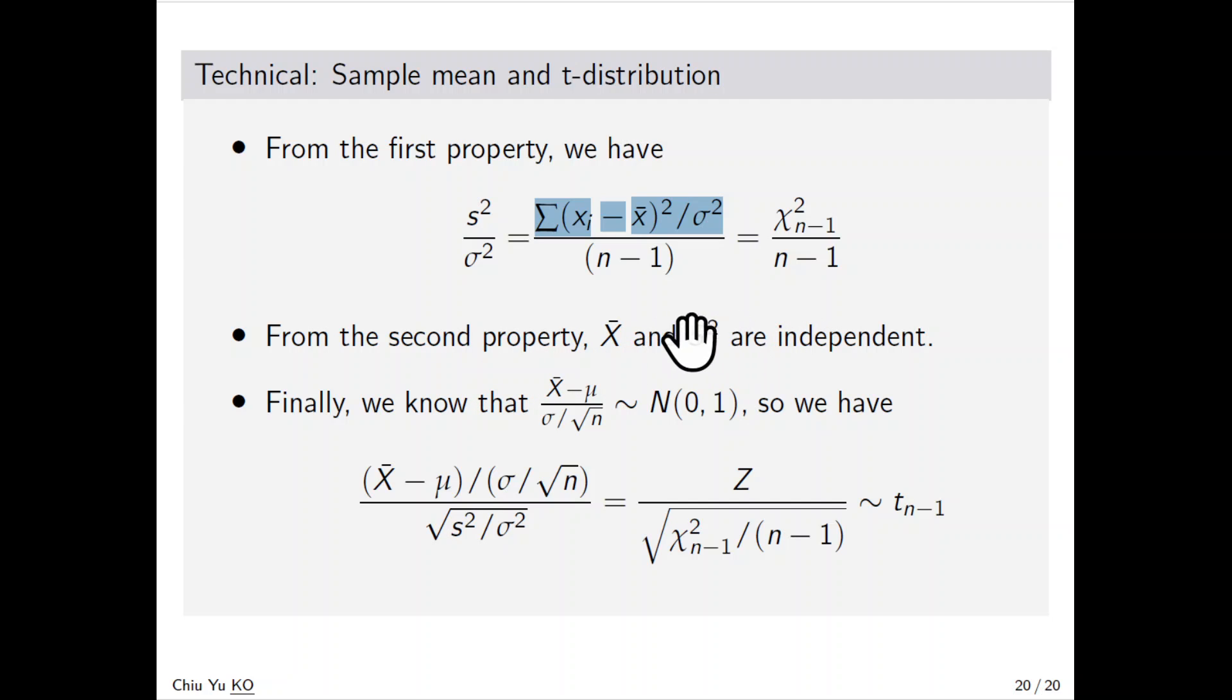This means we can write (X̄-μ)/(s/√n) as a ratio. The numerator (X̄-μ)/(σ/√n) is standard normal Z. The denominator is √(χ²ₙ₋₁/(n-1)). This is exactly the definition of a t-distribution with n-1 degrees of freedom.